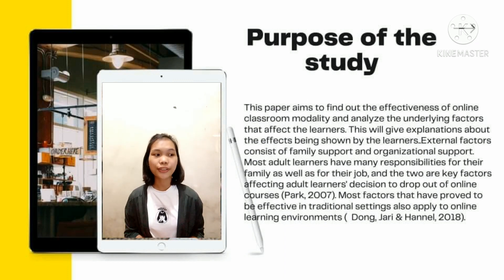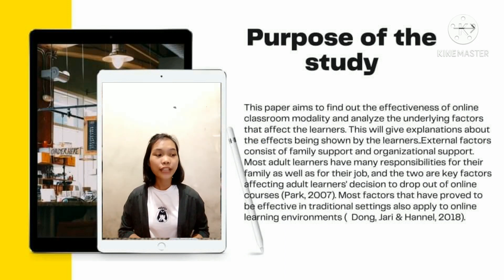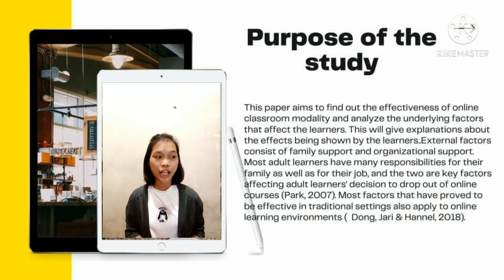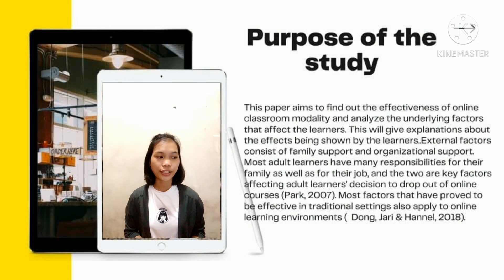This will give explanations about the effects being shown by the learners. External factors consist of family support and organizational support. In our study that we cited, Park 2007 said that most adult learners have many responsibilities for their family as well as for their job, and the two are the key factors affecting adult learners' decision to continue their studies.